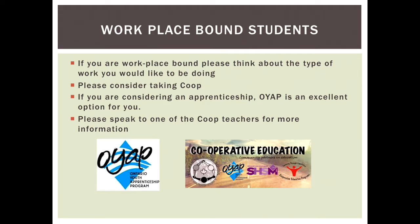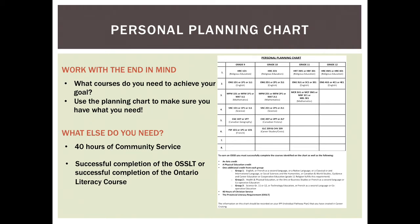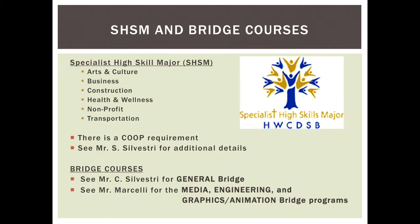For workplace-bound students, think about the type of work you're interested in. Co-op is a great option, and if you're considering an apprenticeship, OYAP is an excellent option as well — you can speak to co-op teachers for more information. Use your personal planning chart — it's always a great idea to work with the end in mind. What do you need to achieve your goals? Research what prerequisites you need for the program choice for college and university. Keep in mind that you need 40 hours of community service and successful completion of your literacy test or the literacy course, as was highlighted earlier this morning. You just heard the breakdown from both Mr. C. Silvestri and Mr. S. Silvestri about the SHSM and Bridge programs — if you're curious or interested, you can come and see them in guidance as well.